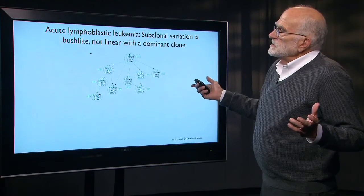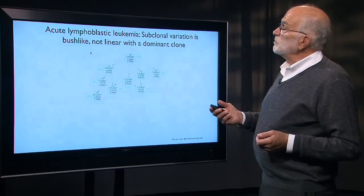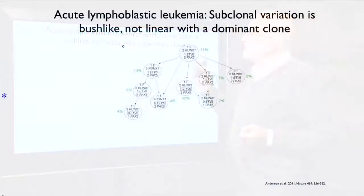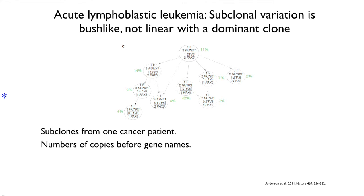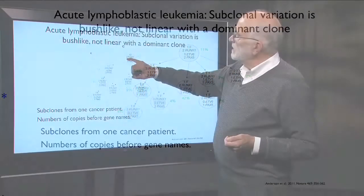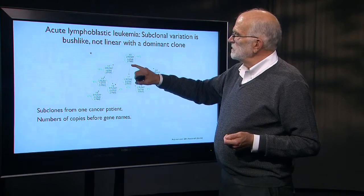In another case, in this case it's acute lymphoblastic leukemia, the variation in the clones was not linear with a dominant clone. These are from one cancer patient. And what you see here are the number of copies of the gene. So there are different gene names here. This clone here has two copies of RUNX1. This one has three copies of that gene and so forth.